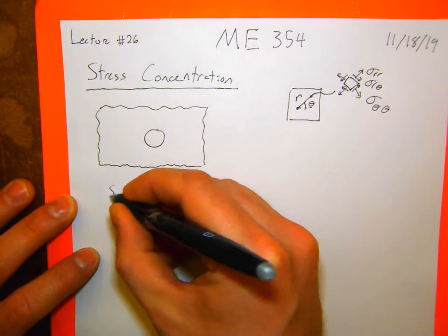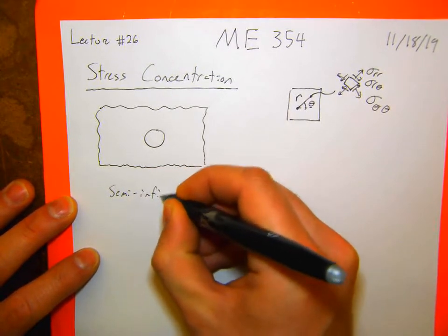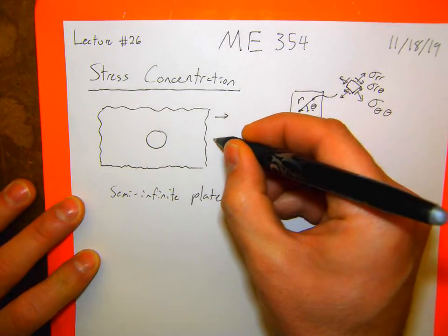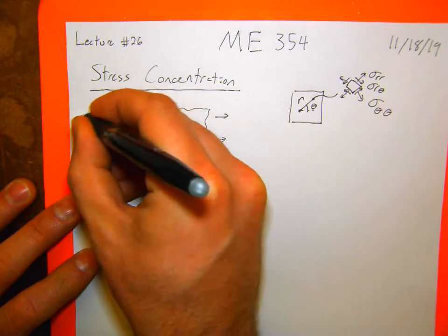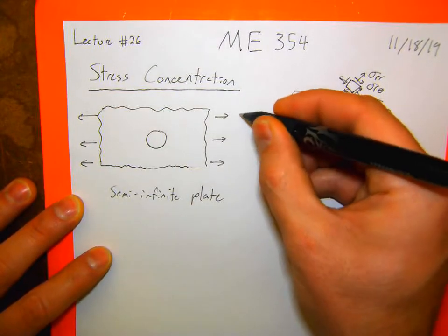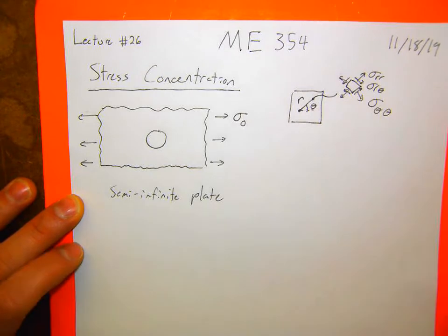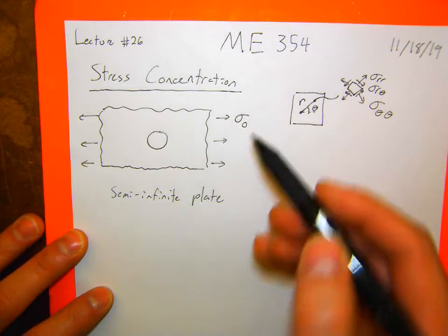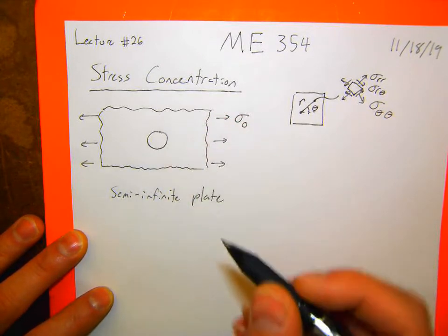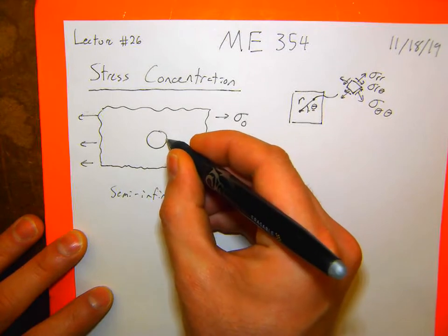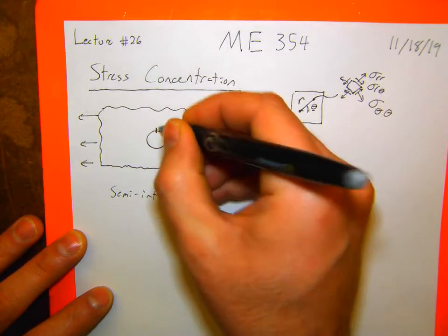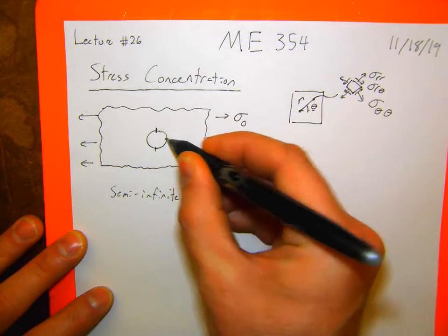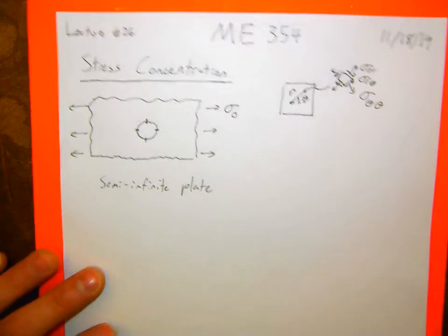Assuming a semi-infinite plate, if I have some far field stress on both directions, I'm going to call this sigma naught — I was using sigma infinity last time and that might have been a little confusing. So sigma naught is my far field stress, and I want to know what the stress concentration around the hole is. Last week we said the maximum stress was probably at the top and bottom of the hole, the minimum at the edges, and the question is how much.